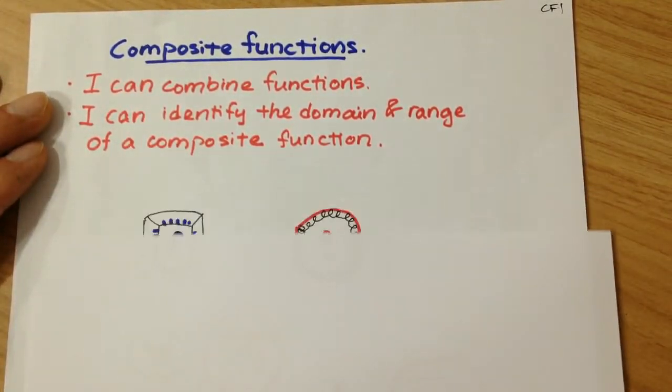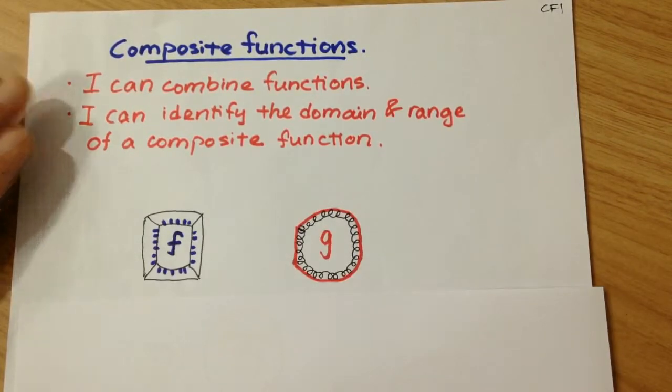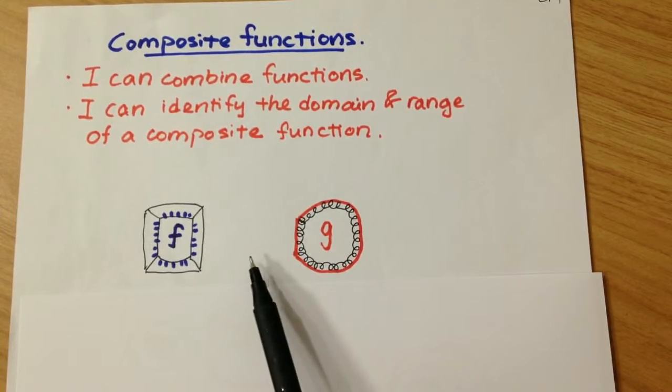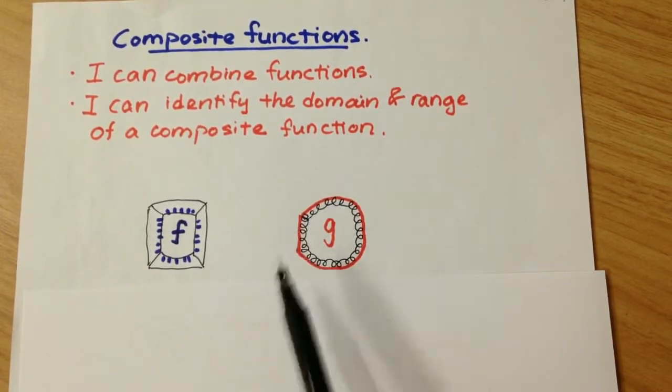You can think of functions as a machine. So we can think of here, we have two particular functions, a function f and a function g.